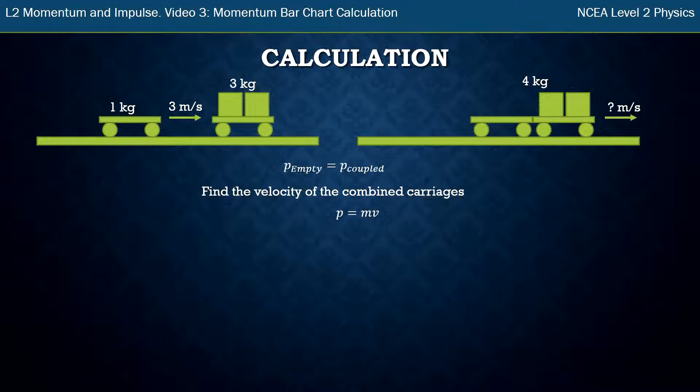I'm just going to rewrite this equation I found using my momentum bar chart: P empty equals P coupled. I'm going to put in there for each P, for each momentum, mass times velocity. So where I had P or momentum of the empty, I now have mass of the empty times velocity of the empty and that equals mass of the combined times the velocity of the combined.